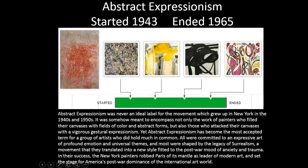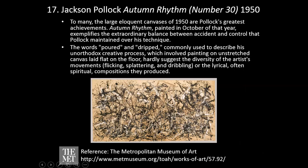Number seventeen — Jackson Pollock, Autumn Rhythm No. 30, 1950. To many, the large eloquent canvases of 1950 are Pollock's greatest achievements. Autumn Rhythm, painted in October of that year, exemplifies the extraordinary balance between accident and control that Pollock maintained over his technique. The words poured and dripped, commonly used to describe his unorthodox creative process — which involved painting on unstretched canvas laid flat on the floor — hardly suggest the diversity of the artist's movements: flicking, splattering, and dribbling, or the lyrical, often spiritual compositions they produced.